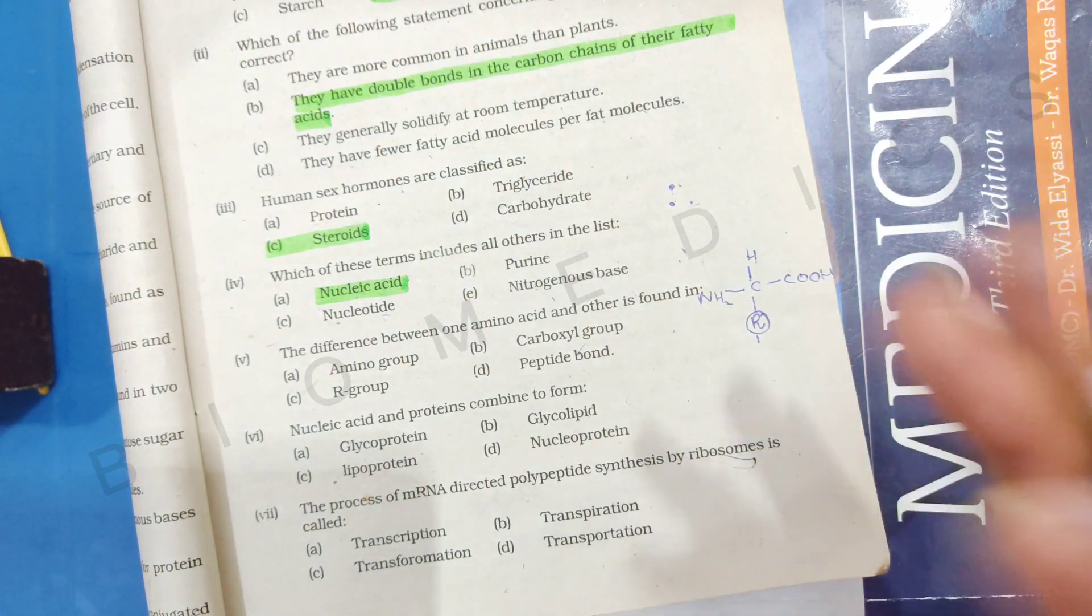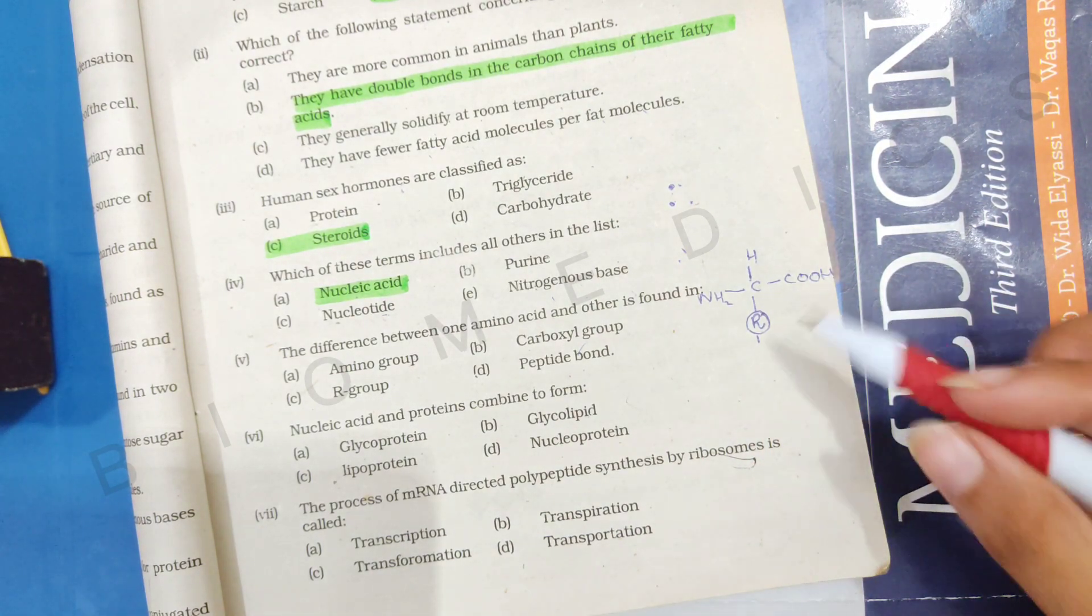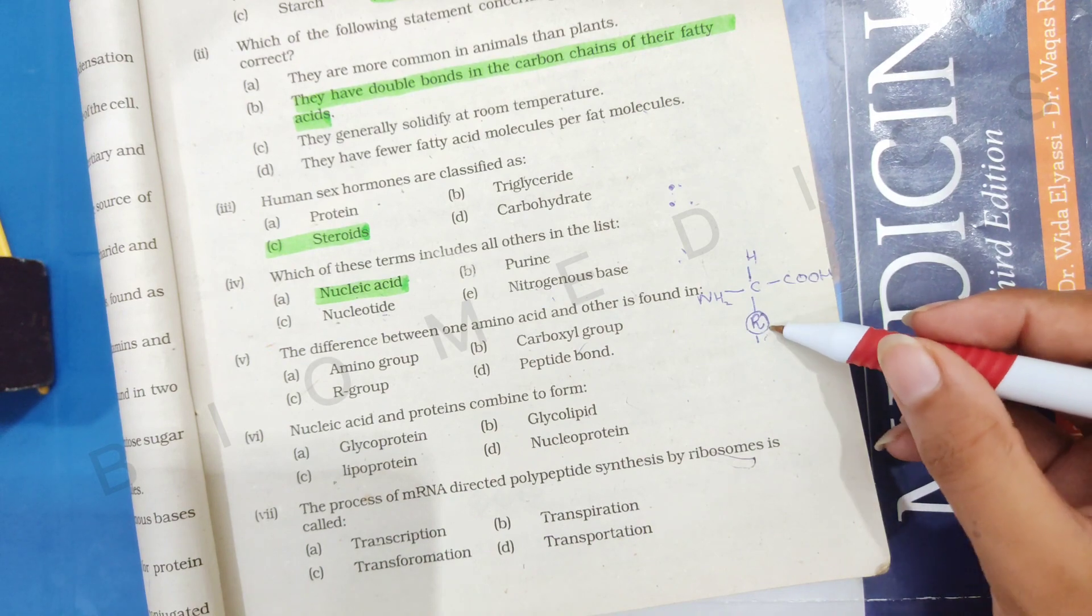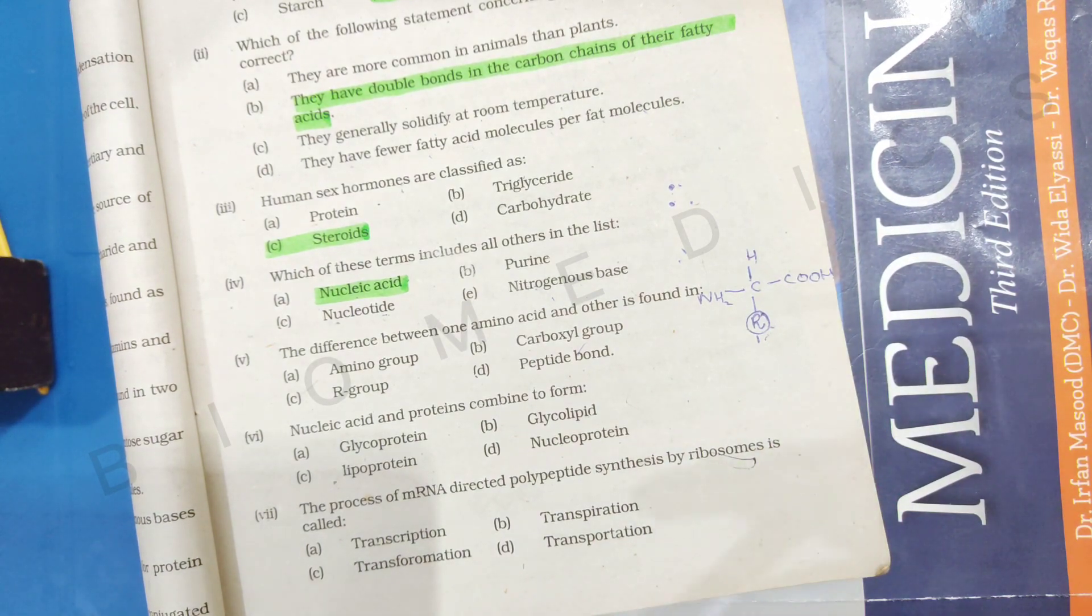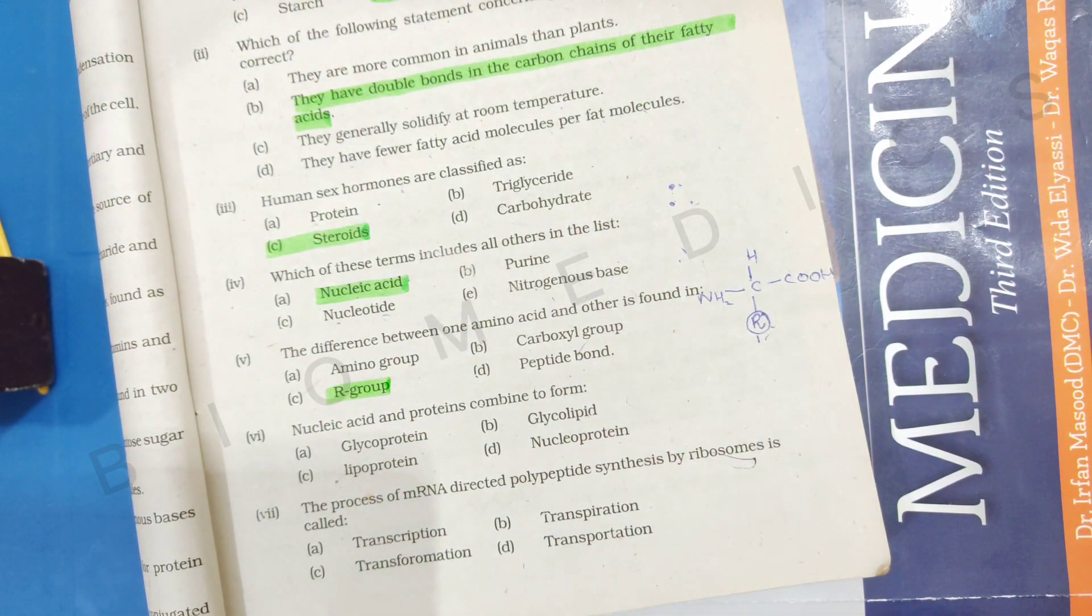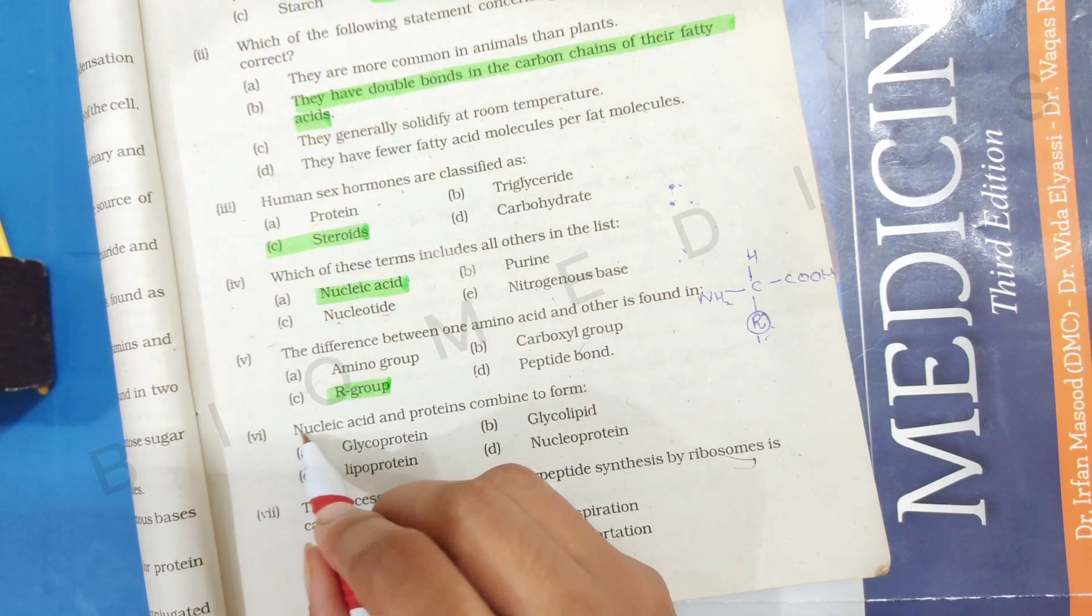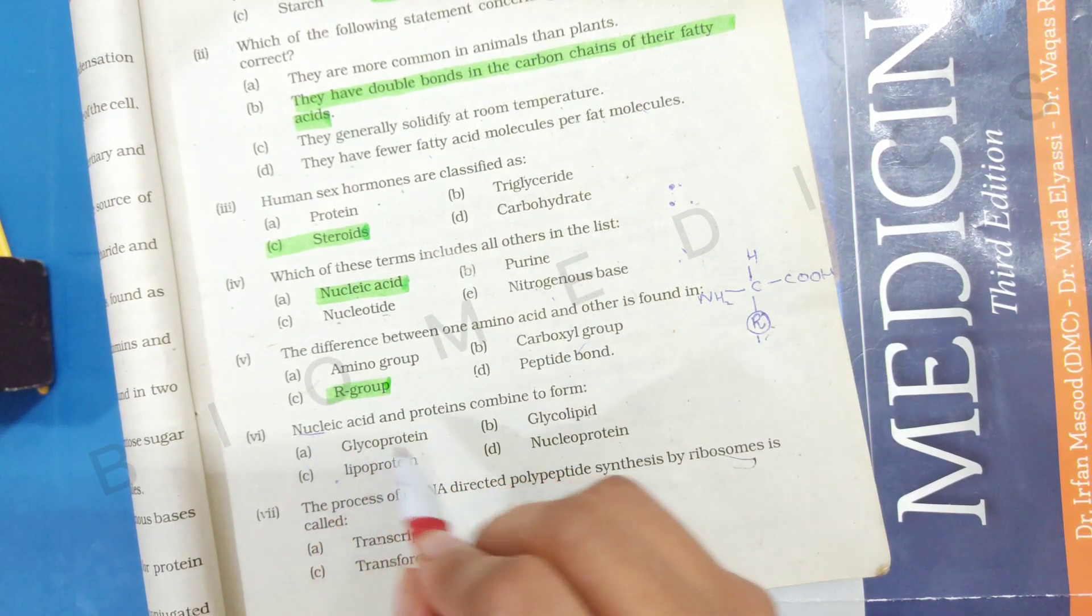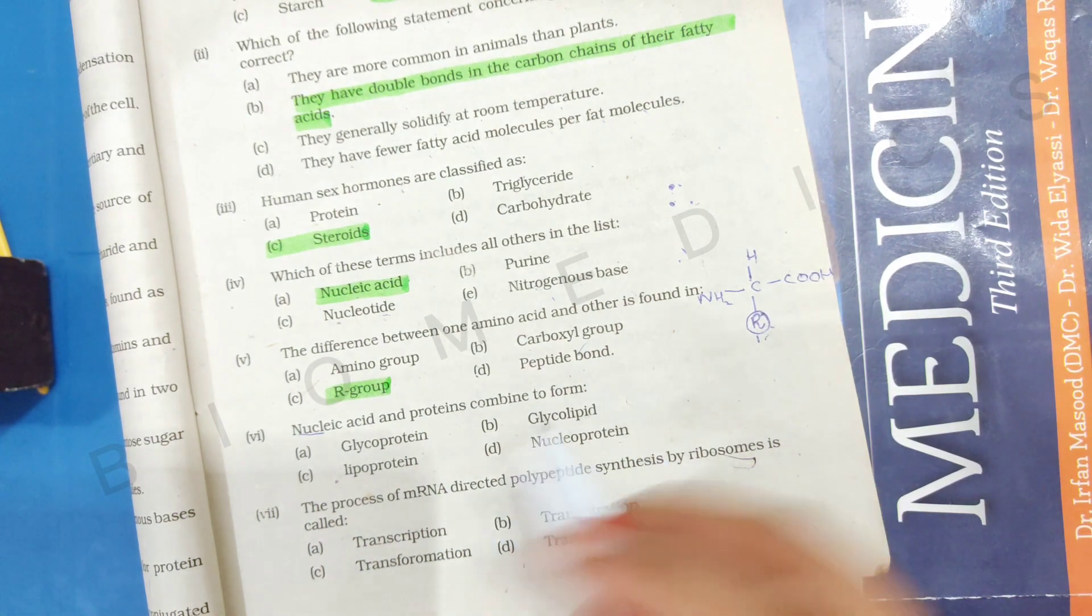We have twenty different amino acids, so changes are in the R group. The R group changes. After that, we have nucleic acid and protein which are combined, and what is it called? You can call it nucleic acid and protein. We call it nucleoprotein.